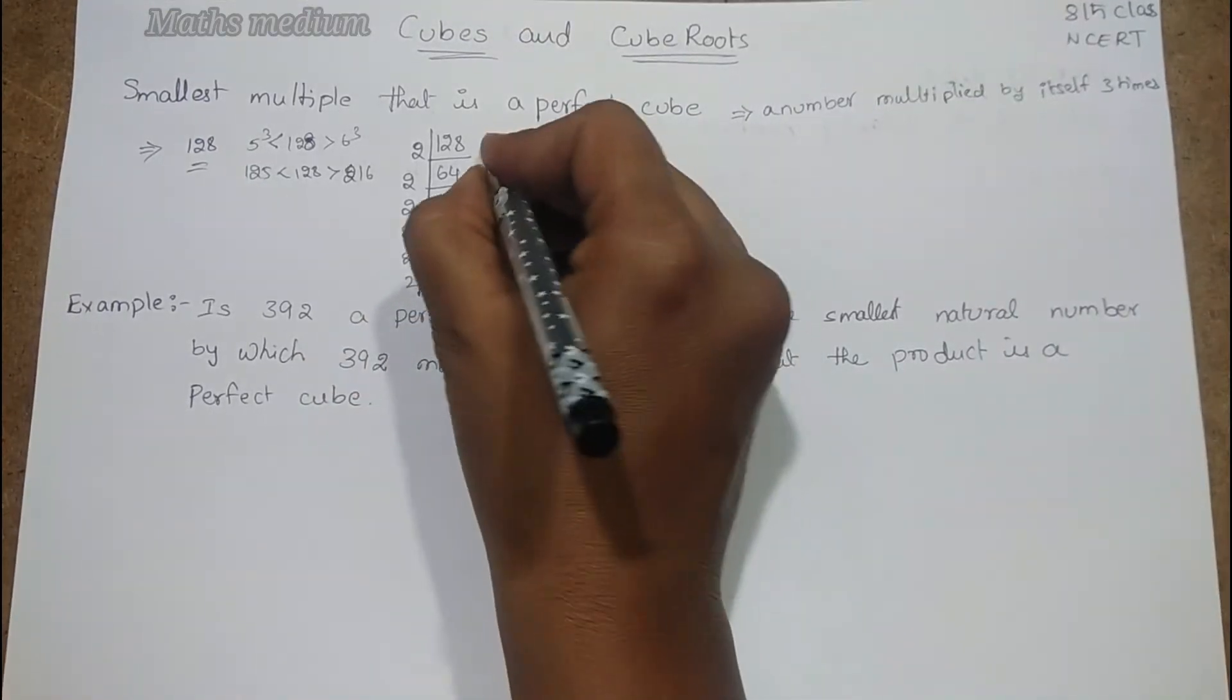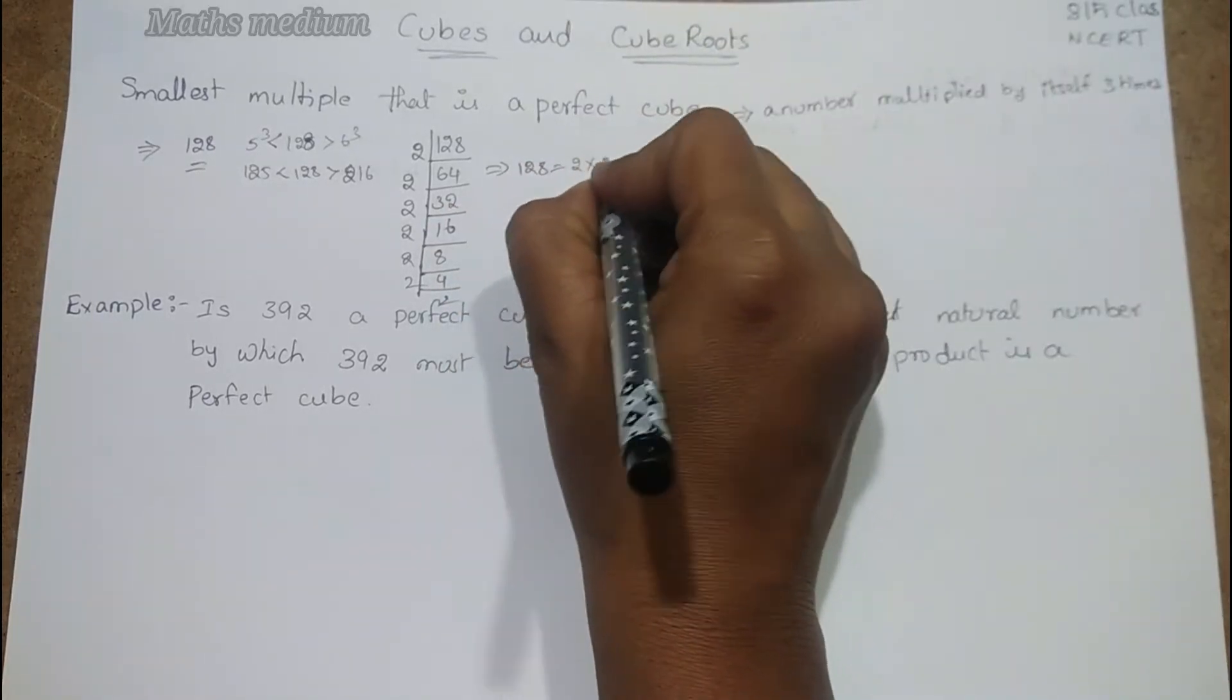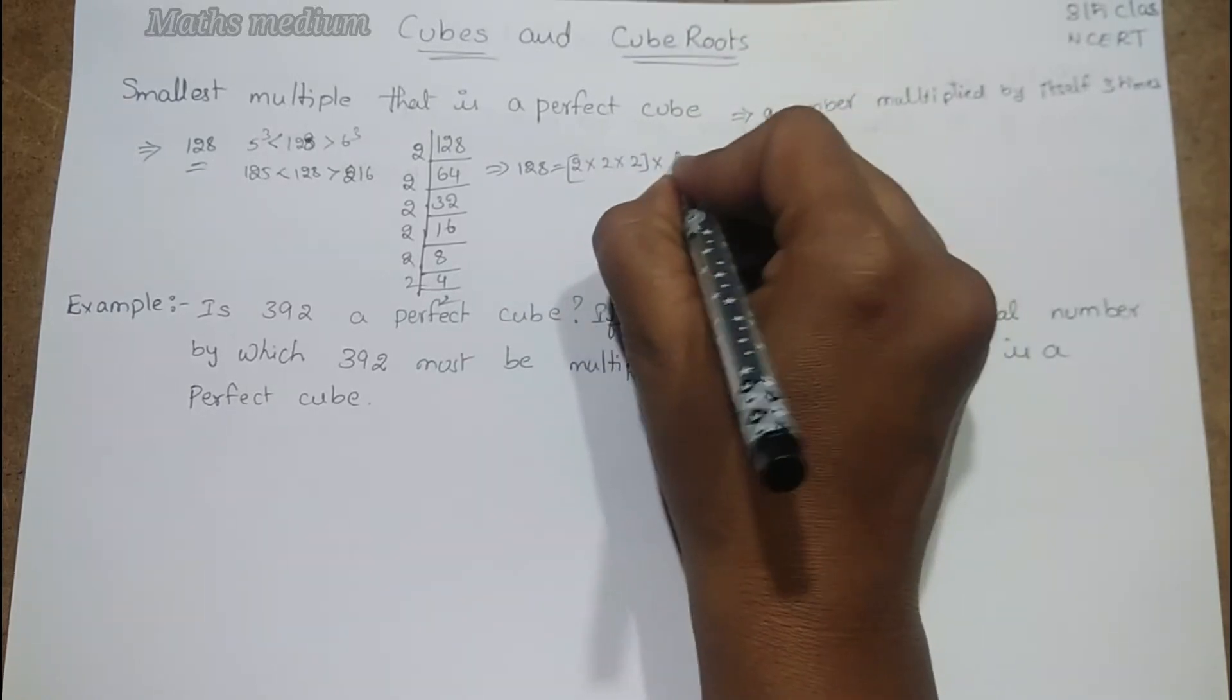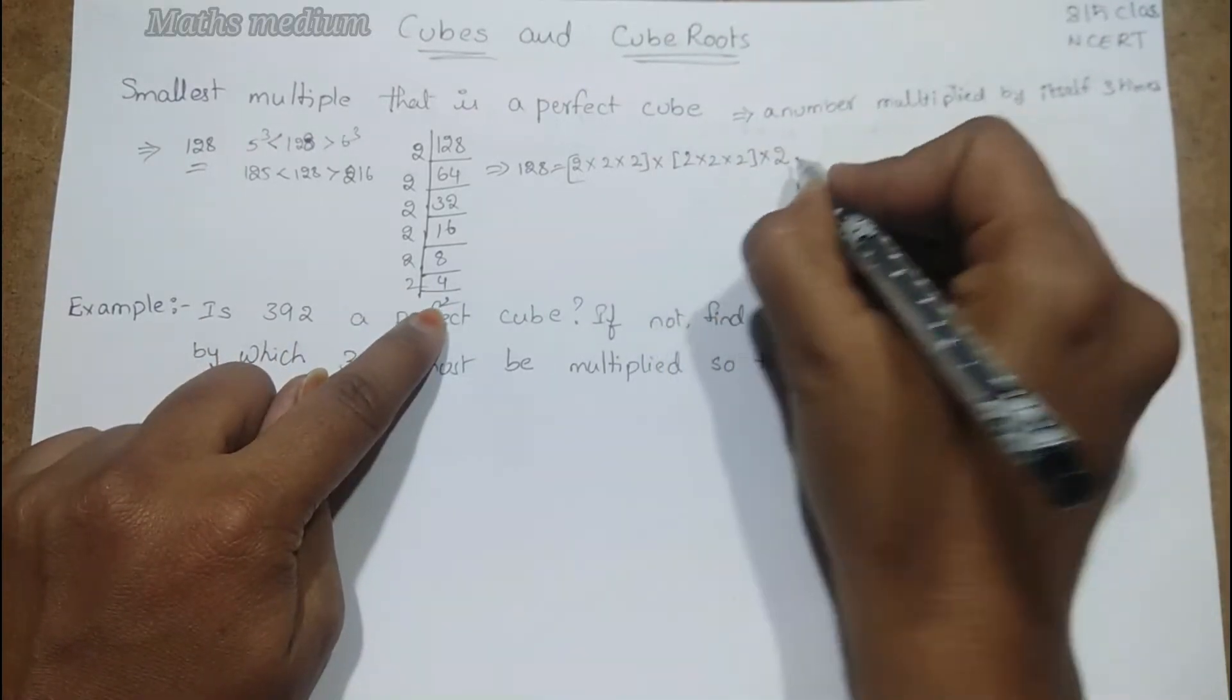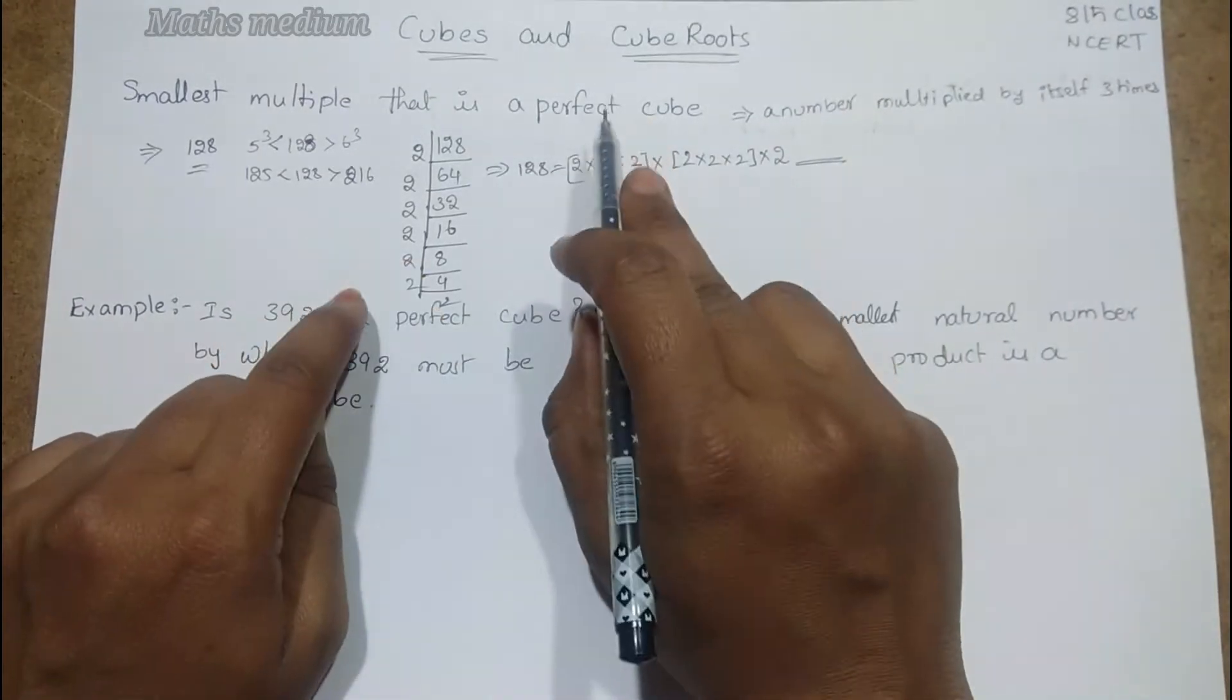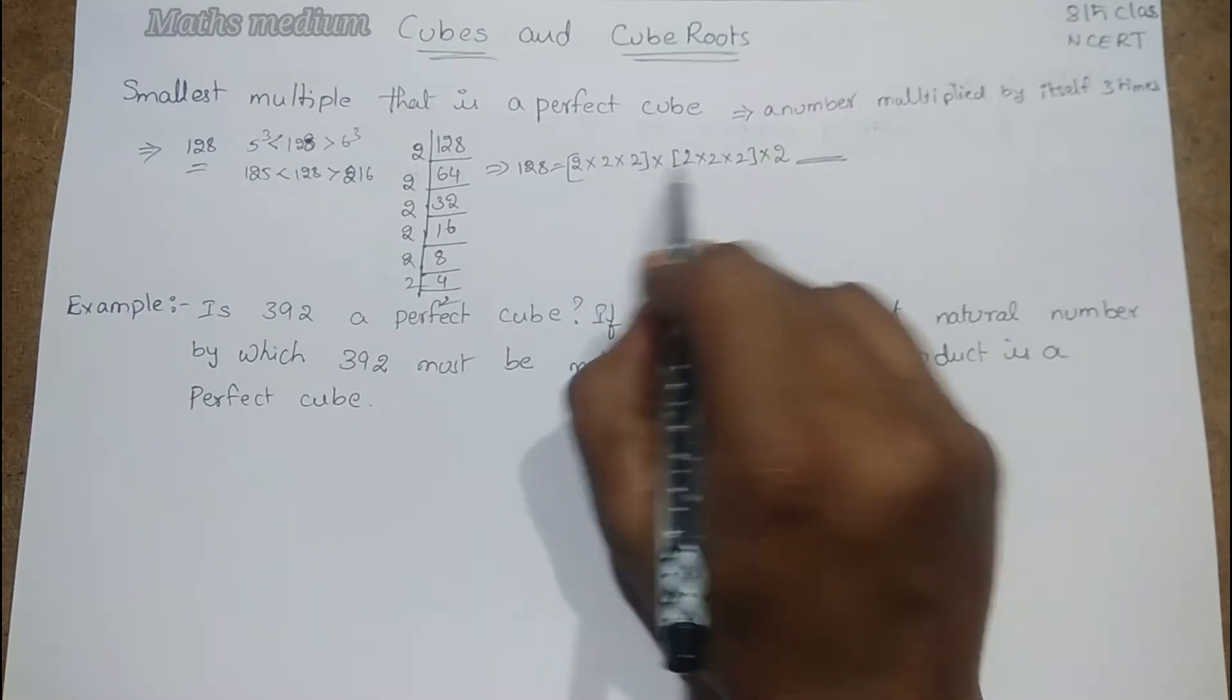So 128 equals 2×2×2 and again 2×2×2, but here this 2 is left. So this is not a perfect cube. We know that prime factorization of a cube has three numbers multiplied by itself.